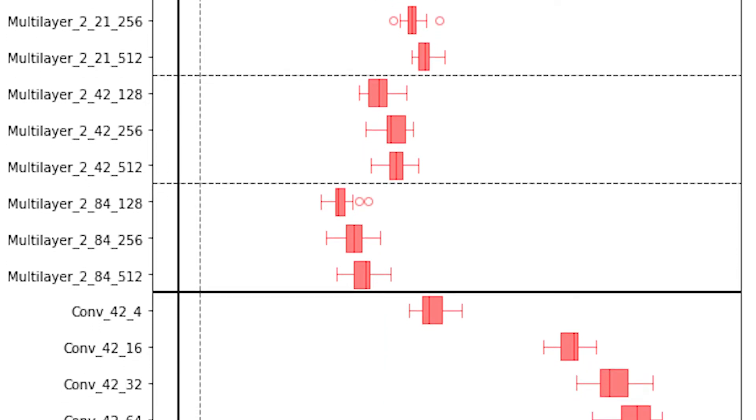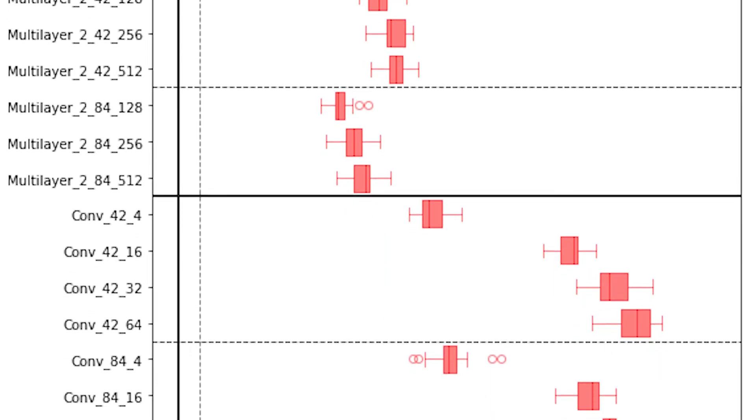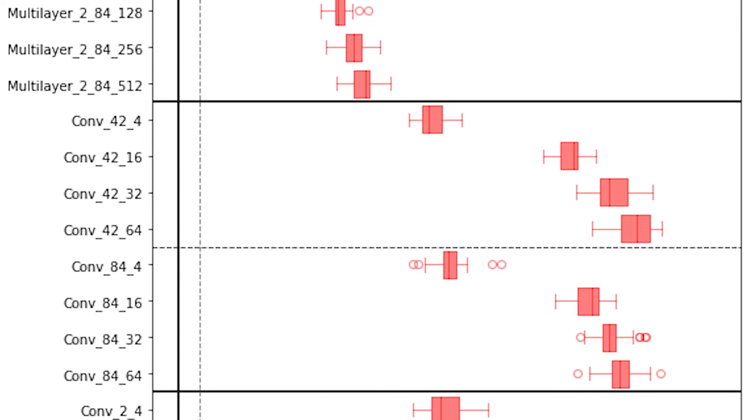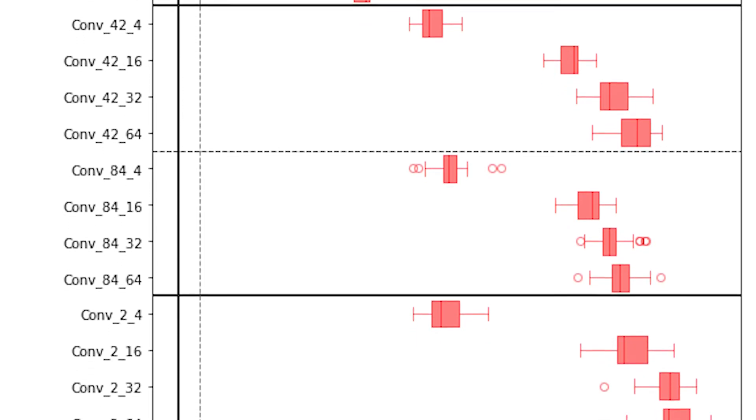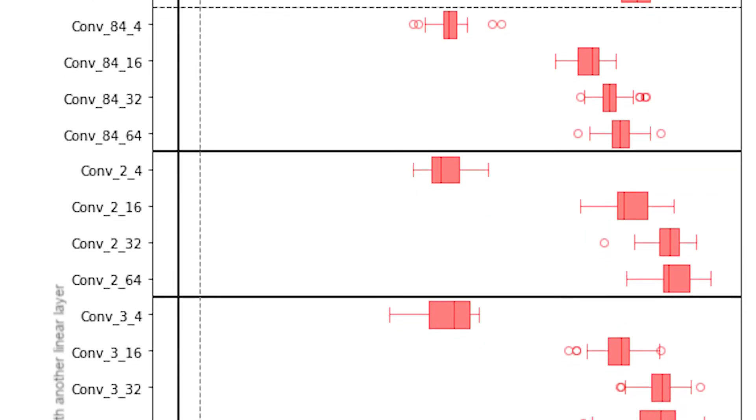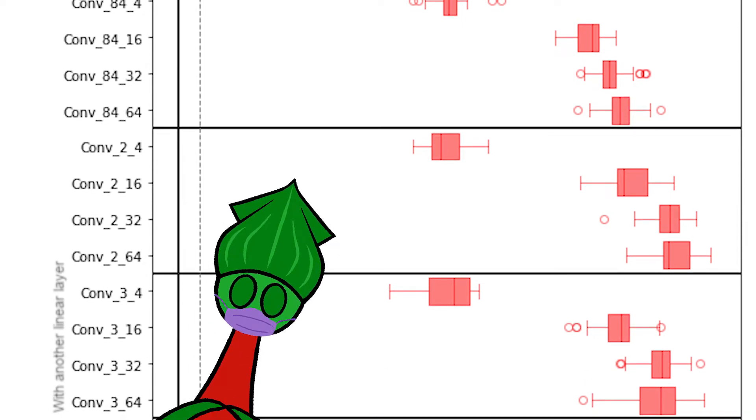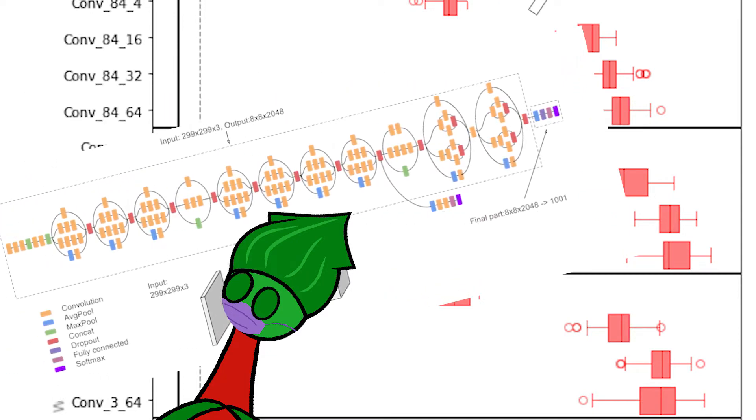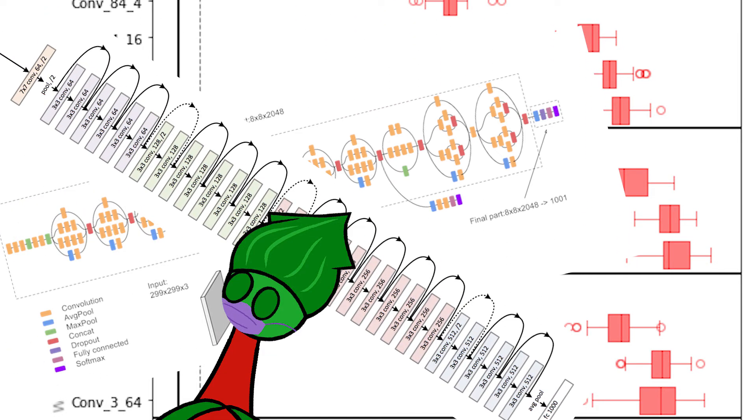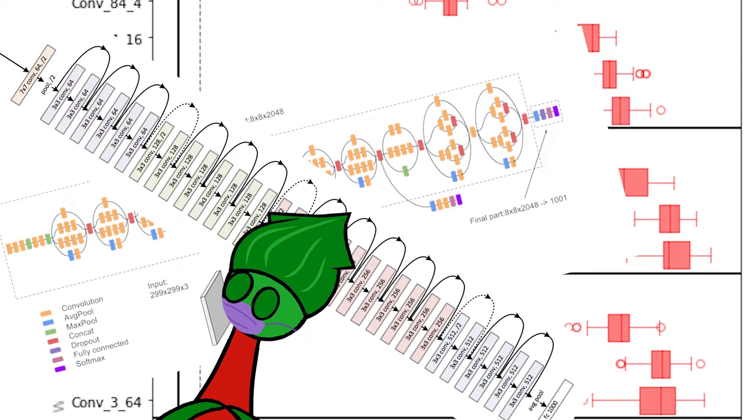But accuracies jump up to around 20-25% as soon as we apply convolution. And having more channels in convolution really helps. So the lesson is, being deeper and bigger doesn't always make a model better. What really works is appropriate model architecture. Google's Inception v3 and Microsoft's ResNet are way bigger than these models. But they also have revolutionary structures, like dense blocks and residual networks.